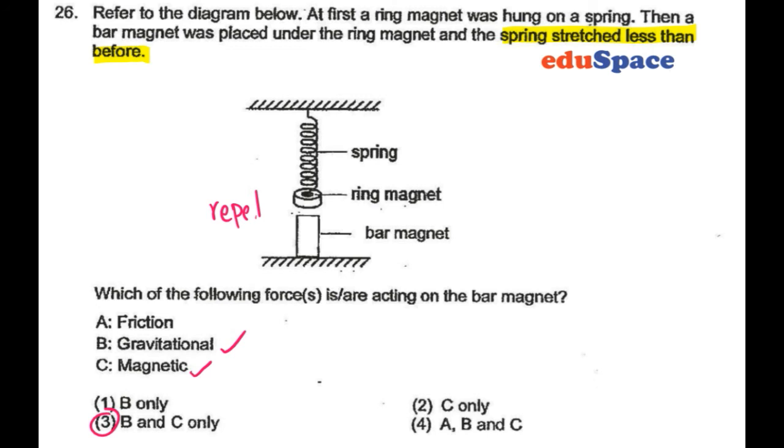And gravitational force simply because the bar magnet has mass as well. So in this case, the answer should be number 3.